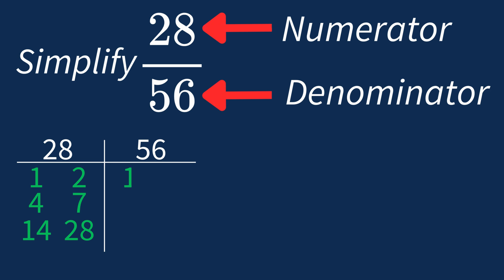For 56, the factors are 1, 2, 4, 7, 8, 14, 28, and 56.